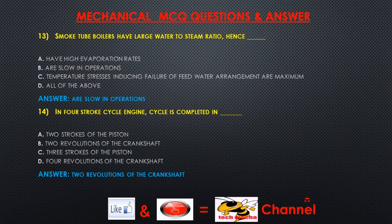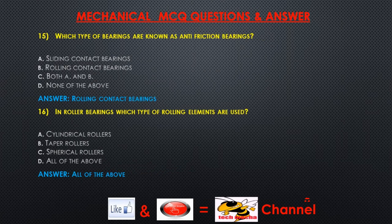Question 14: In a 4-stroke cycle engine, the cycle is completed in — A) 2 strokes of the piston, B) 2 revolutions of the crankshaft, C) 3 strokes of the piston, D) 4 revolutions of the crankshaft. Answer: 2 revolutions of the crankshaft. Question 15: Which type of bearings are known as anti-friction bearings? A) sliding contact bearings, B) rolling contact bearings, C) both A and B, D) none of the above. Answer: Rolling contact bearings.